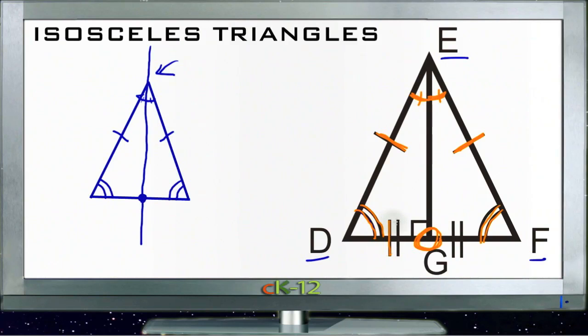And this bottom line where it meets the base of the triangle, it meets it at 90 degrees, so it ends up being perpendicular. And that means that this line down here is a perpendicular bisector of the top angle and at the bottom of the triangle, the base of the triangle.